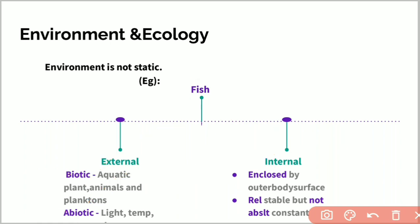Abiotic components include light, temperature, water, oxygen, and other dissolved gases. Everything has stable and dynamic characteristics.